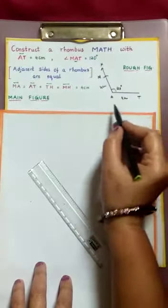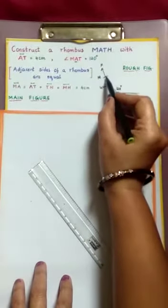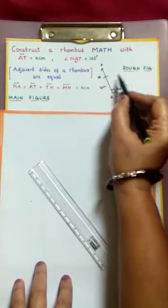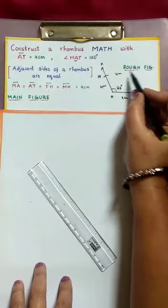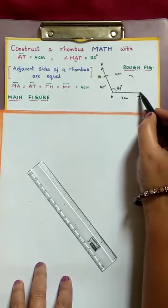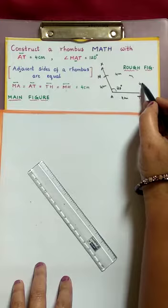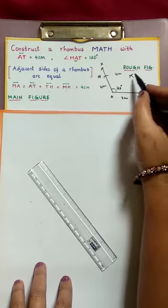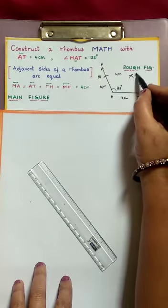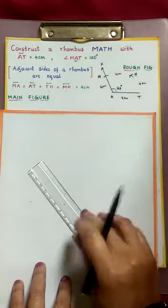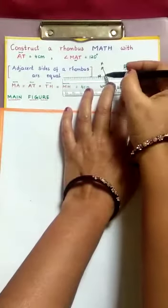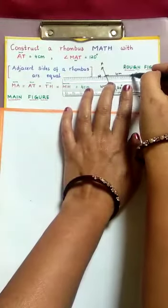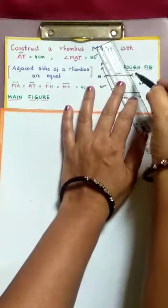As we know that all sides are equal. With M as center, again the same 4 cm radius, draw an arc. Again, taking 4 cm radius, cut this arc which intersects at H. Then we join MH and HT.